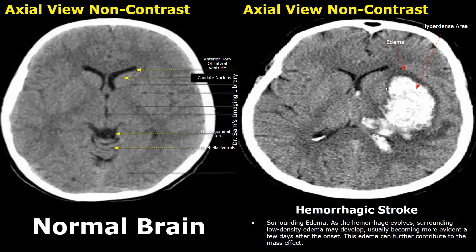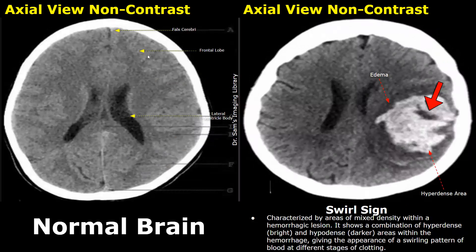This area is the edema. In the normal image, this central line is the falx cerebrae, this part of the brain is the frontal lobe, and these structures are the bodies of lateral ventricles. This is another image of intracerebral hemorrhage — we can see the hyperdense area as well as the surrounding edema.